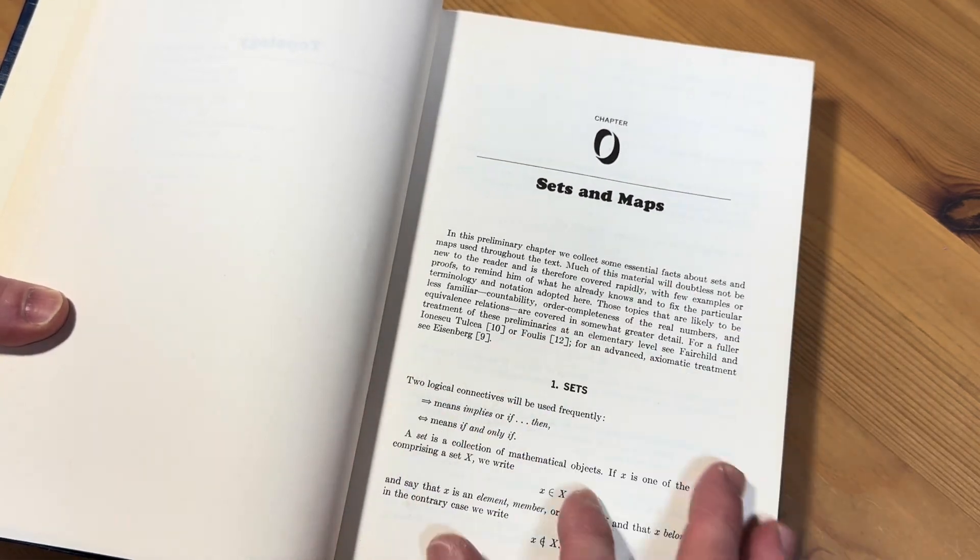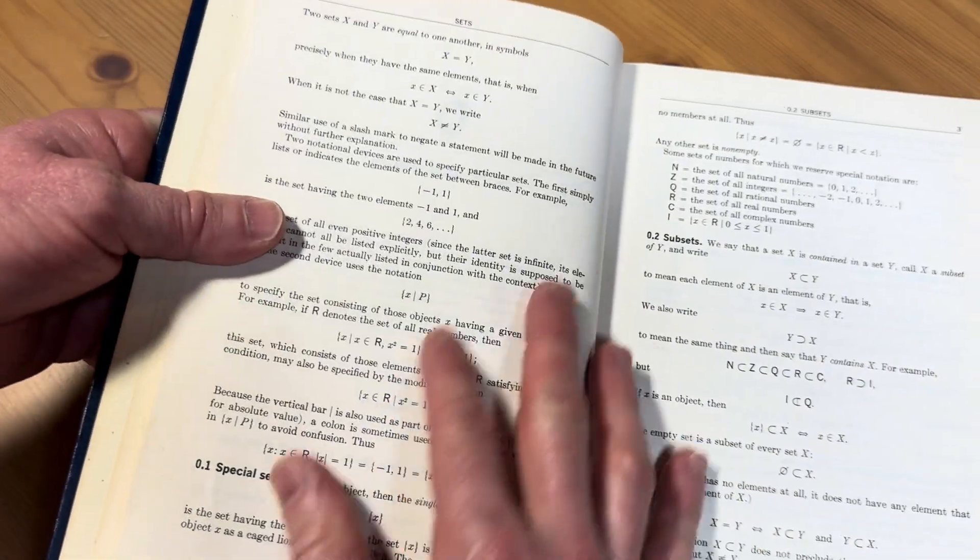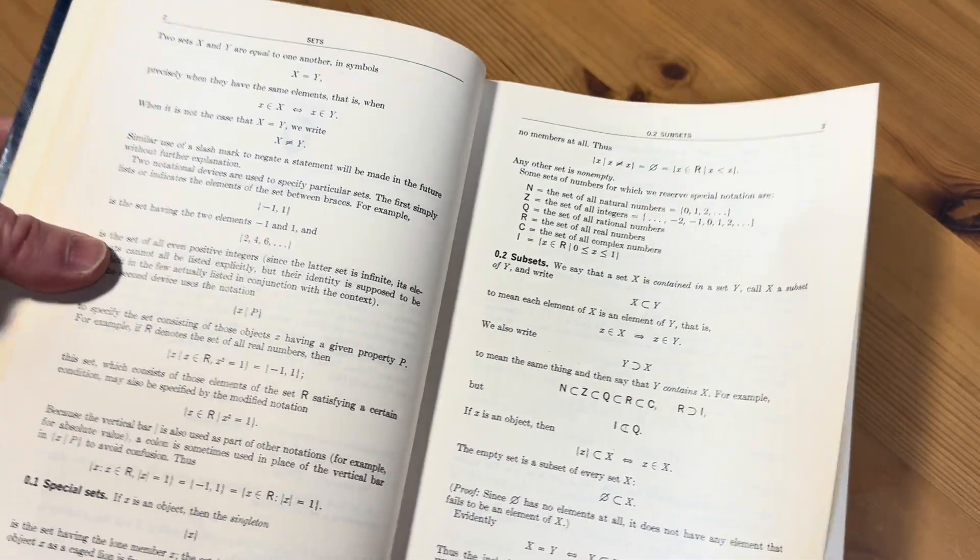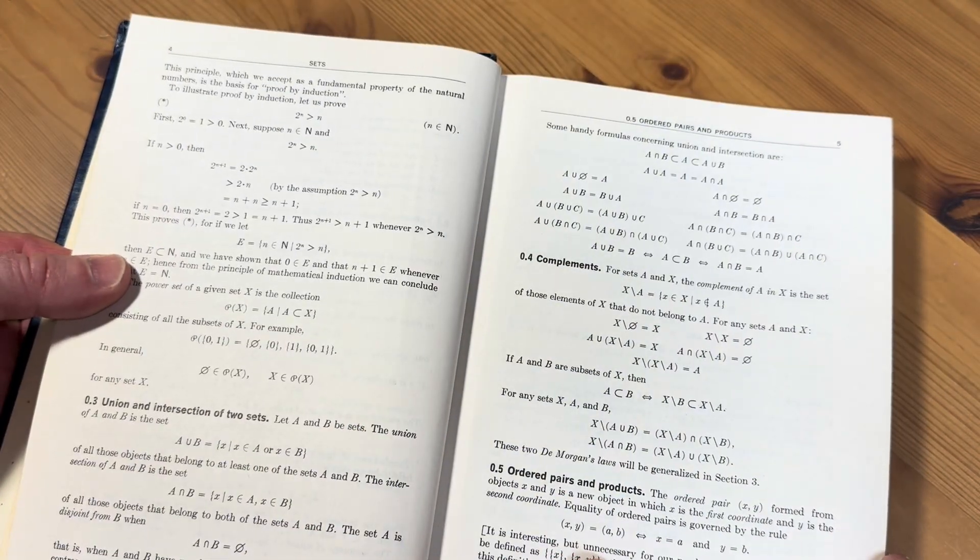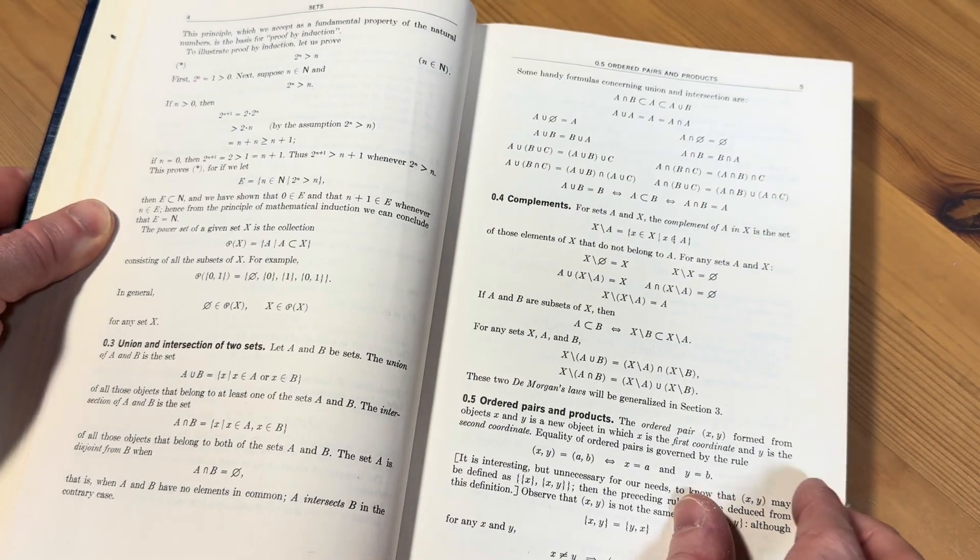So it starts off in a very readable fashion with sets. So this is something that you probably already know. And if you don't, most advanced math books start with set theory. So that's something that you'll see in most books. And you can see here, it's got some really clean proofs. I just got to give it a whiff. Ah, I just want to sit down and work through some problems here actually.